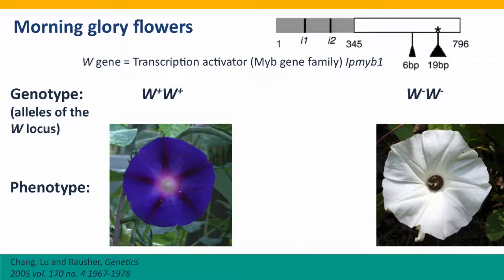We're going to start with morning glory flowers. We thought about these already in the context of how gene regulation can change phenotype. The point of this slide is to tie this phenotype — the production of the blue pigment that makes the flowers blue — with a genotype. The genotype of a homozygous plant that produces blue flowers is that it has two copies of the wild-type allele, the functional allele, indicated by the superscript plus. So we write its genotype as W+ W+.